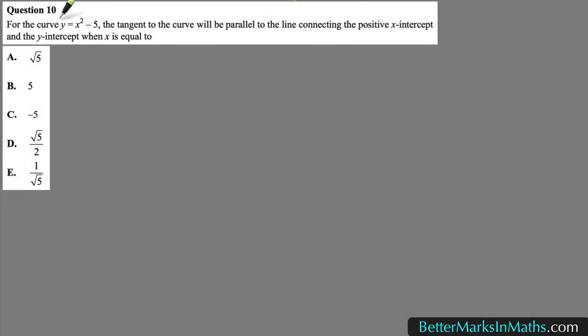In this question, for the curve y equals x squared minus 5, the tangent to the curve will be parallel to the line connecting the positive x-intercept and the y-intercept when x is equal to one of these values.